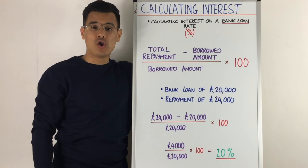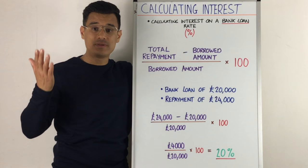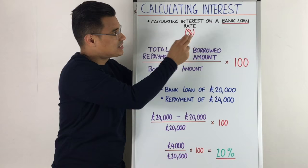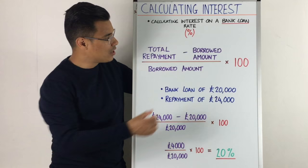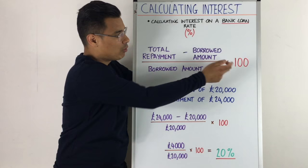Let's have a session on calculating interest. A very feasible question that could be examined is for you to be able to calculate the interest rate expressed as a percentage on a bank loan. You need to know the formula. The formula is: total repayment minus the borrowed amount, all divided by the borrowed amount, times by 100, because it's expressed as a percentage.